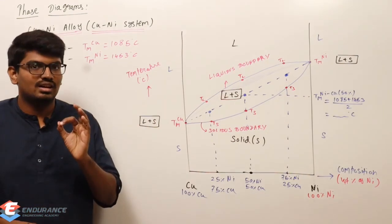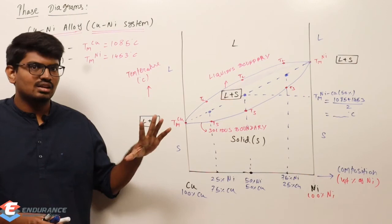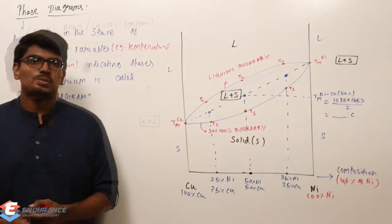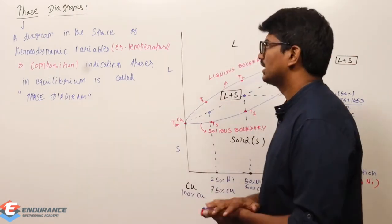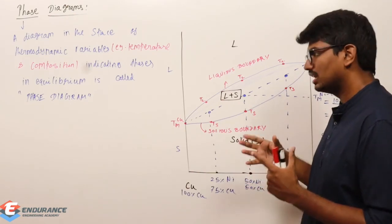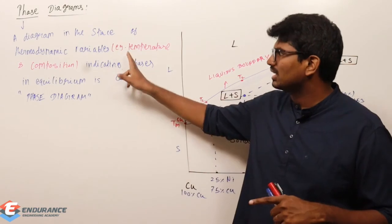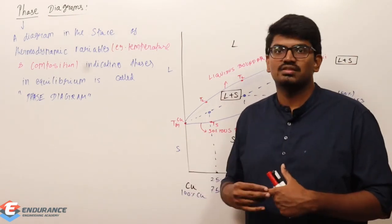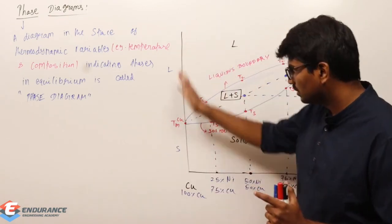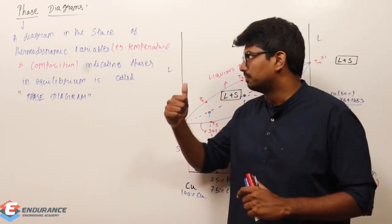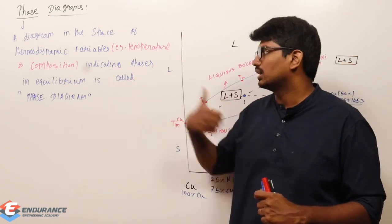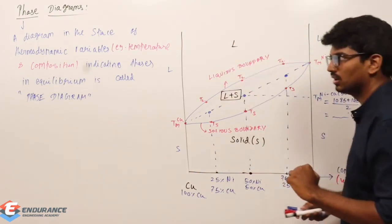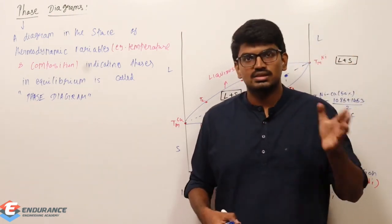I have just given you an introduction about phase diagrams. There are a number of things to be discussed. We will first understand the definition of phase, composition, etc., and then come back to this copper-nickel diagram to discuss further. A phase diagram is a diagram in the space of thermodynamic variables — in our cases temperature and composition — indicating phases in equilibrium: solid, liquid plus solid, and liquid. We will proceed and discuss the definition of phase and composition next time.